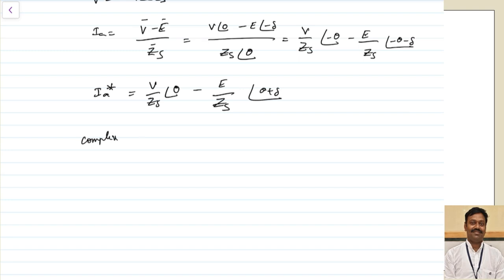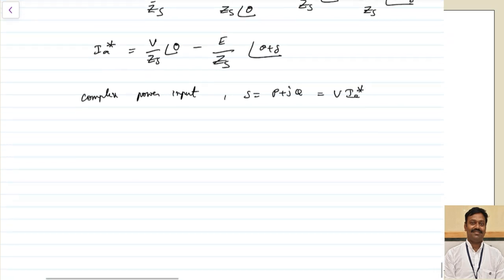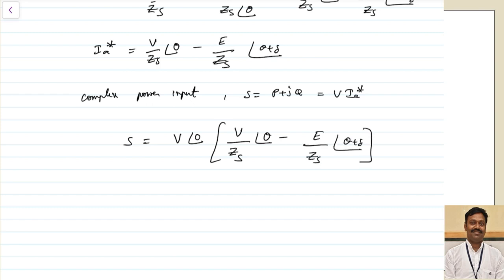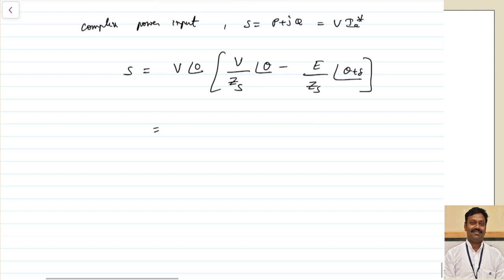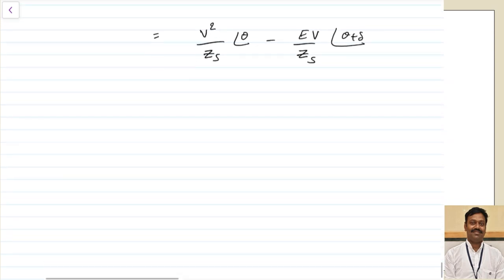The complex power input S = P + jQ is given by S = V · Ia*. Substituting, S = V∠0° multiplied by [(V/Zs)∠θ − (E/Zs)∠(θ + δ)], which gives S = (V²/Zs)∠θ − (EV/Zs)∠(θ + δ).